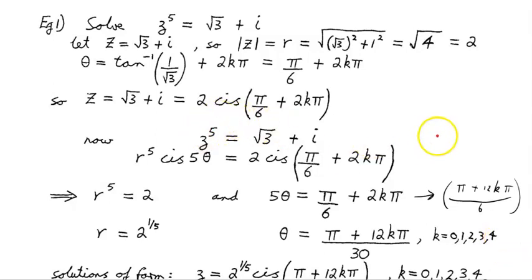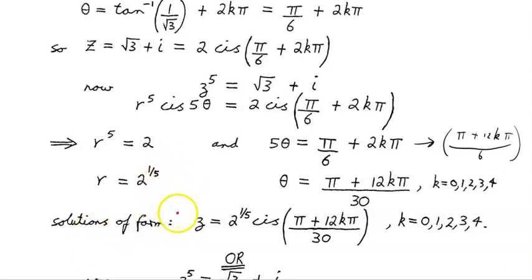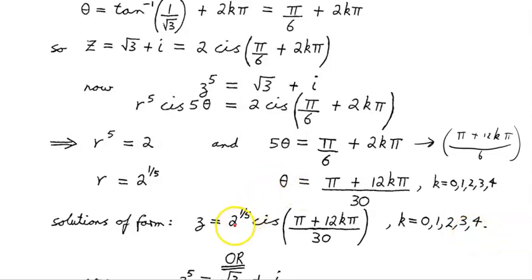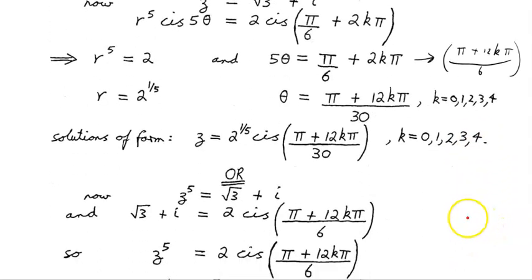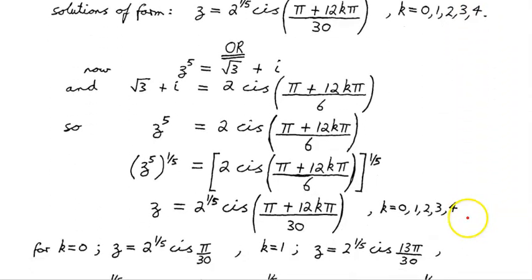Notice there are 5 solutions because it's the power of 5. The solutions are of the form z = 2^(1/5) cis((π + 12kπ)/30), where k = 0, 1, 2, 3, 4. Notice that all 5 solutions have the same modulus value — 2 to the power of 1/5. So if we plot them on the Argand diagram, they're all the same distance from the origin, lying on a circle.